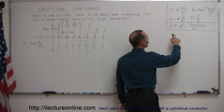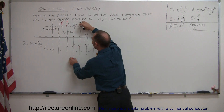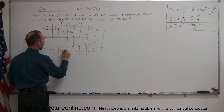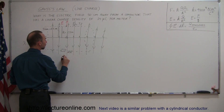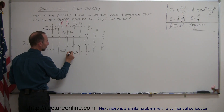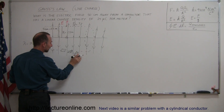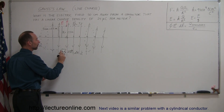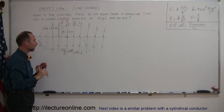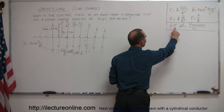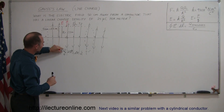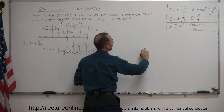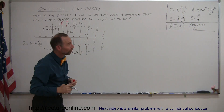Gauss then said that if we take the surface integral of the electric field multiplied by dA — where dA is a small surface element with a unit vector pointing directly away, perpendicular to that area element — and we multiply the strength and direction of the electric field at each little element times the little dA, and integrate that over the entire surface of the cylinder, that is equal to the charge enclosed inside the surface divided by epsilon sub-naught.